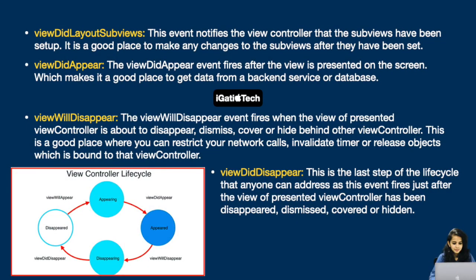viewDidLayoutSubviews: notifies the view controller that subviews have been set up — good place to make changes after they've been laid out. viewDidAppear: fires after the view is presented on screen — good place to fetch data from a backend service or database. viewWillDisappear: fires when the view is about to disappear, dismiss, or be covered — good place to cancel network calls, invalidate timers, or release objects bound to that view controller. viewDidDisappear: the last lifecycle step, fires just after the view has disappeared, been dismissed, or hidden. Check the graph representation on screen.